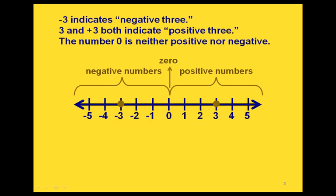Let's look at some specific integers on this number line. For example, we have two of them graphed here. One of them is negative 3. Notice how we write this — we just put a minus sign in front of the 3, and we call this negative 3. For 3 over here, we can write it either with or without the plus sign, and to distinguish it from negative 3, we call it positive 3.